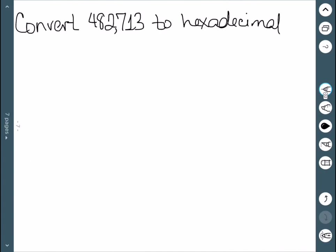Our next example, we have this number that we want to convert to hexadecimal. So base 16. And we start by dividing by 16. When we divide this by 16, we get a quotient of 30,169 with a remainder of 9.